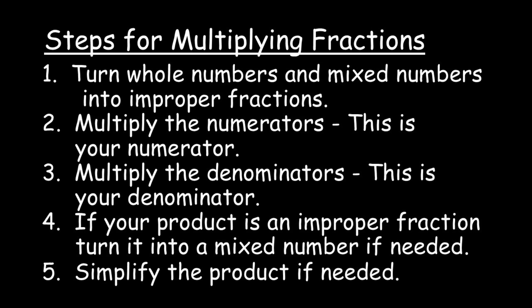We'll start with multiplying fractions. Let's go through the steps before we look at our examples. Any whole number and mixed number in your problem you need to turn into improper fractions. Then you'll multiply the numerators, which will become your numerator, and multiply the denominators, which will become your denominator. If the product is an improper fraction, turn it into a mixed number if needed, then simplify if needed.